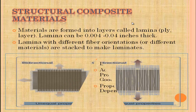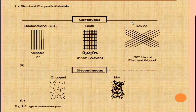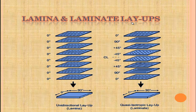Structural composite materials are formed into layers called lamina. Lamina can be 0.004 to 0.04 inches thick. Lamina with defined fiber orientation or defined materials are stacked to make laminates. Some structural composite material forms include unidirectional, cloth, and roving, as well as chopped mat. These are the diagrams of lamina and lamina layups.